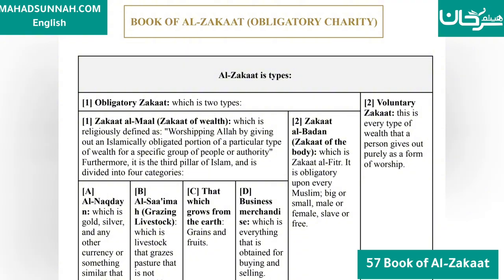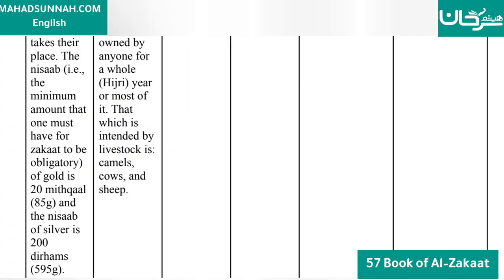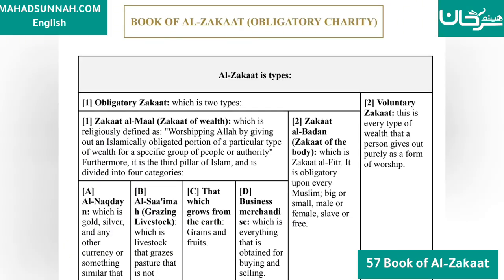The next category is Al-Sa'imah, Grazing Livestock, which refers to livestock that graze on pastures not owned by anyone for the whole year or most of it. The livestock intended here are camels, cows, and sheep. The third category is that which grows from the earth, and the fourth is business merchandise, which is everything obtained for buying and selling.